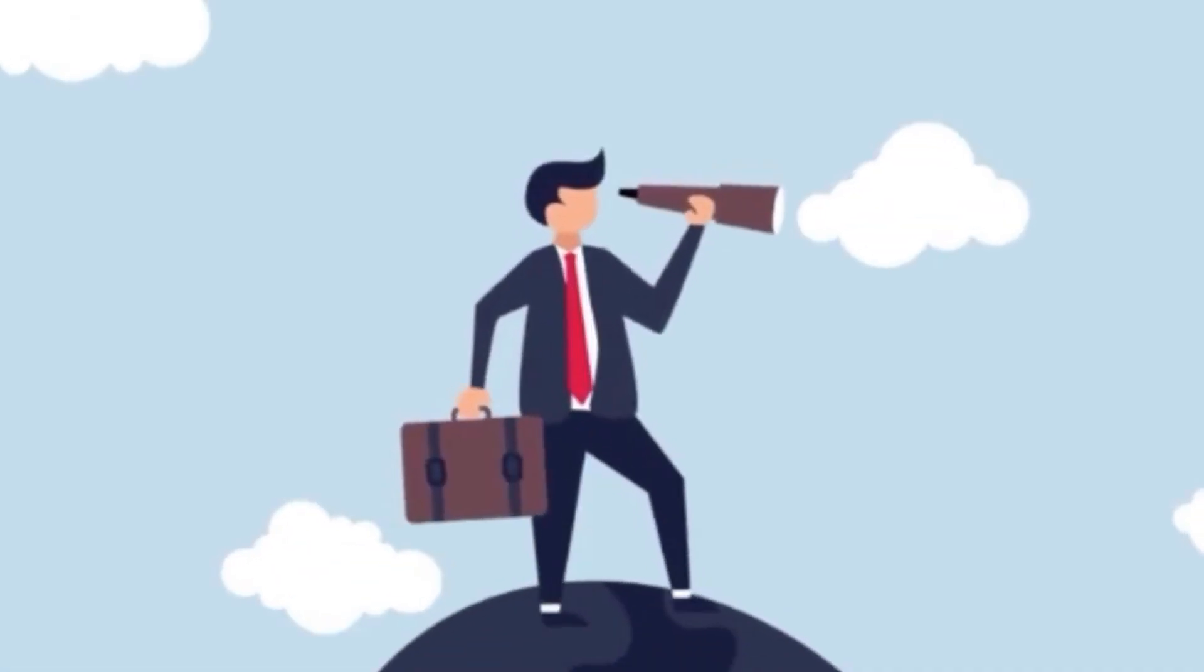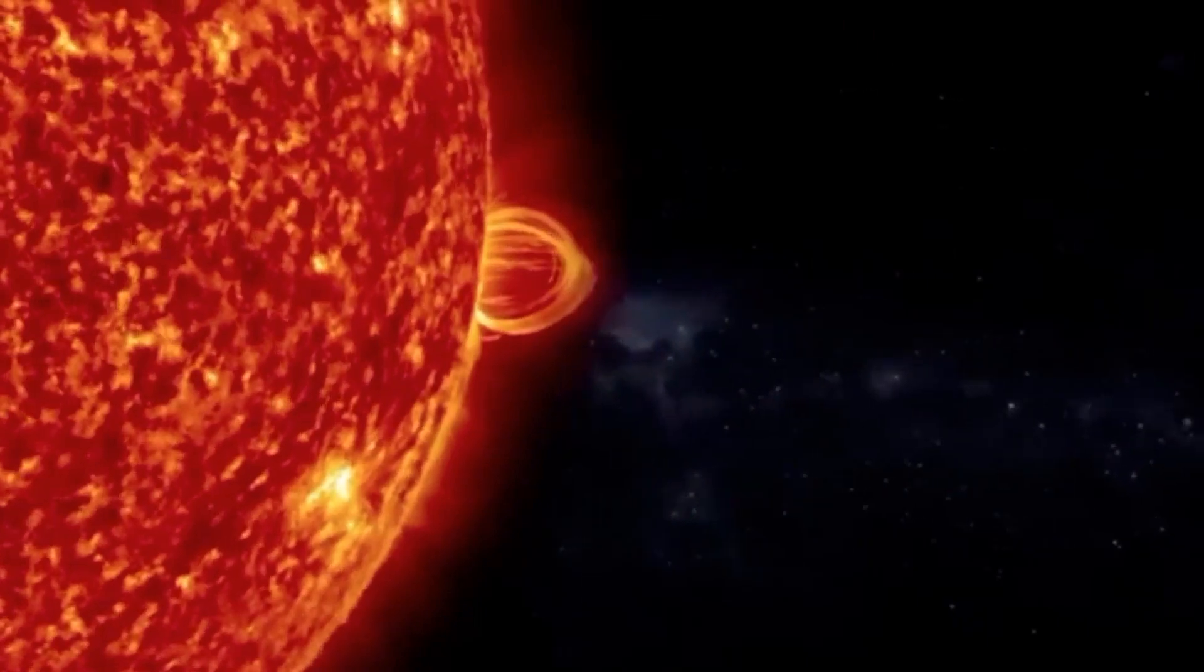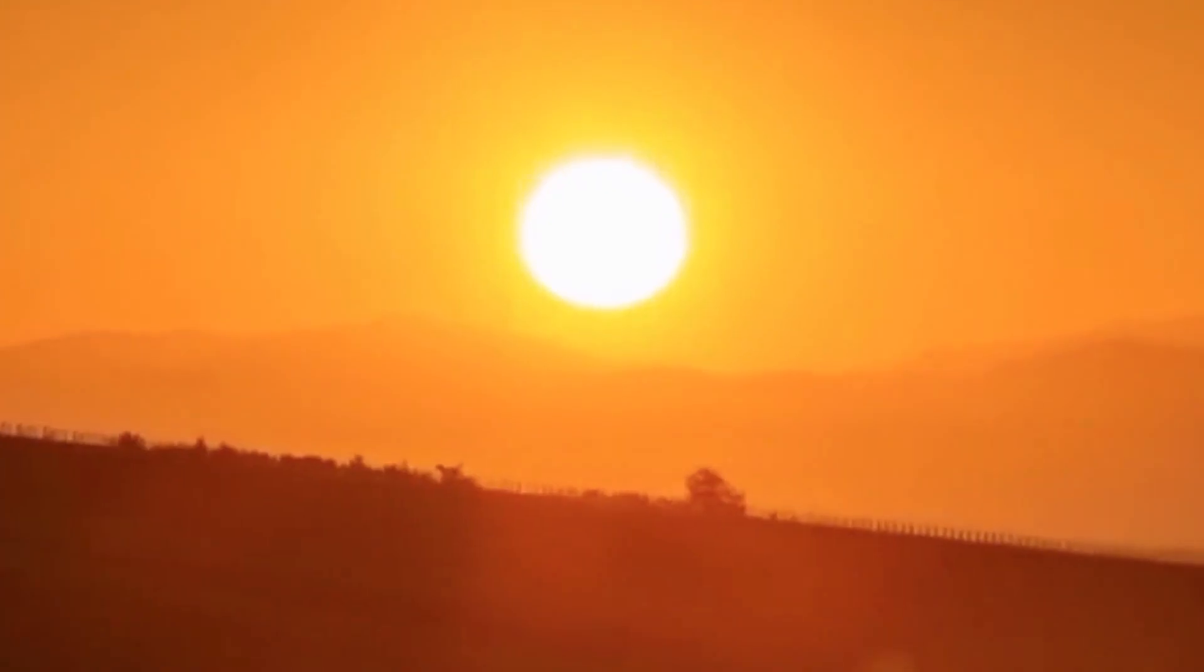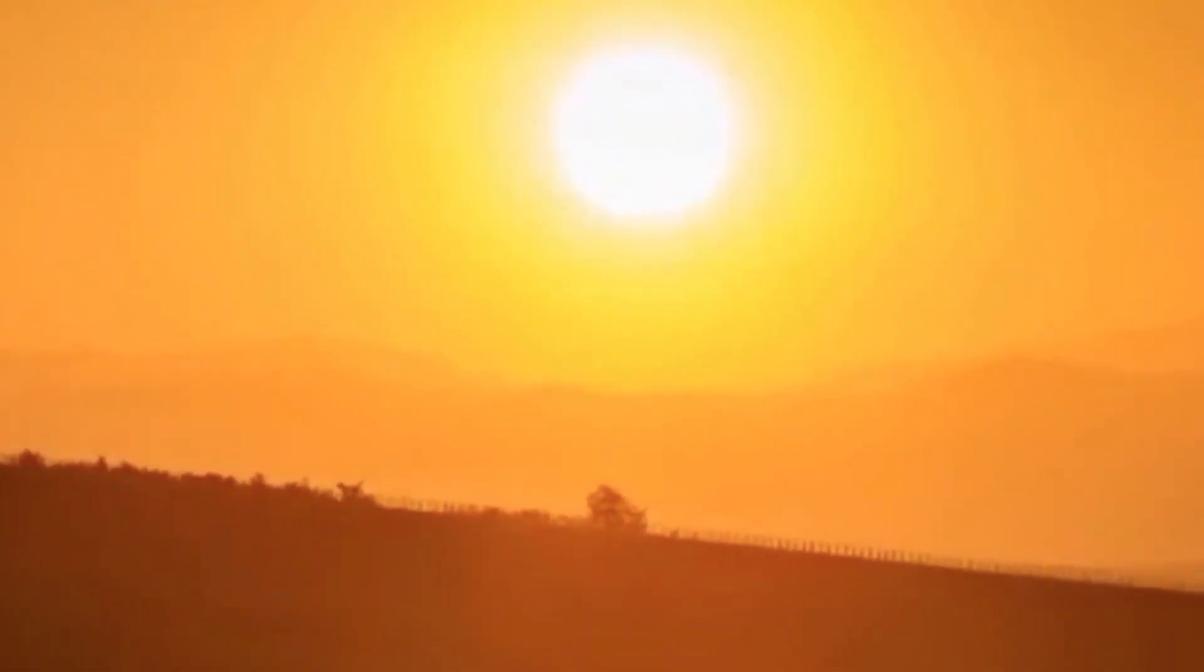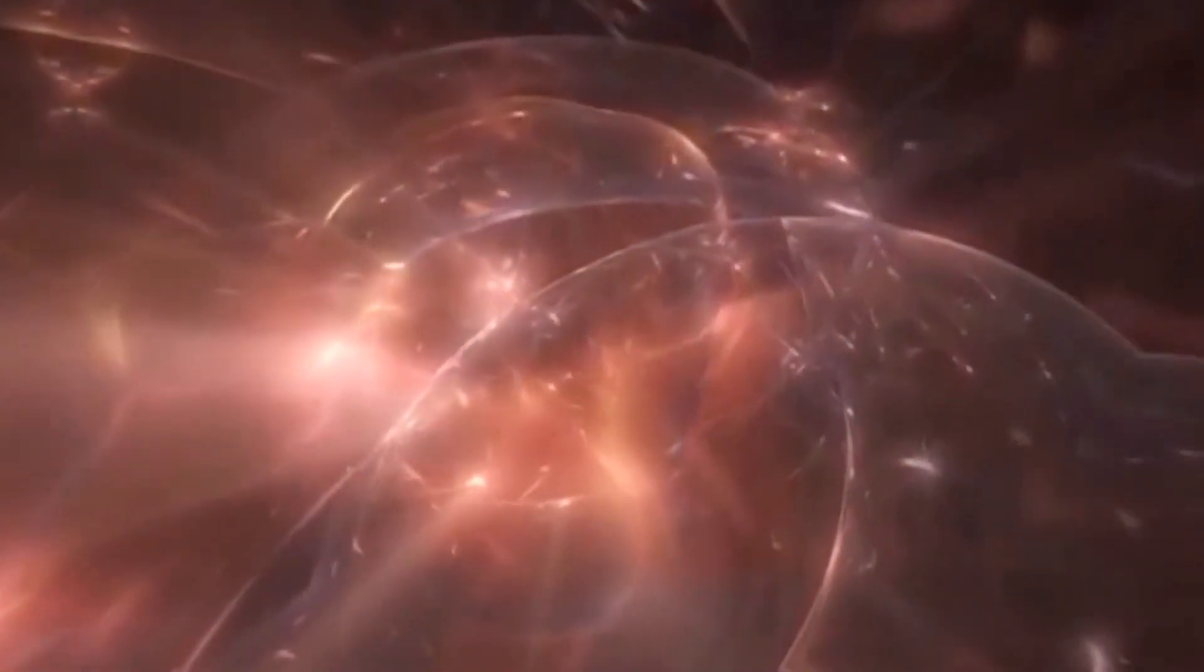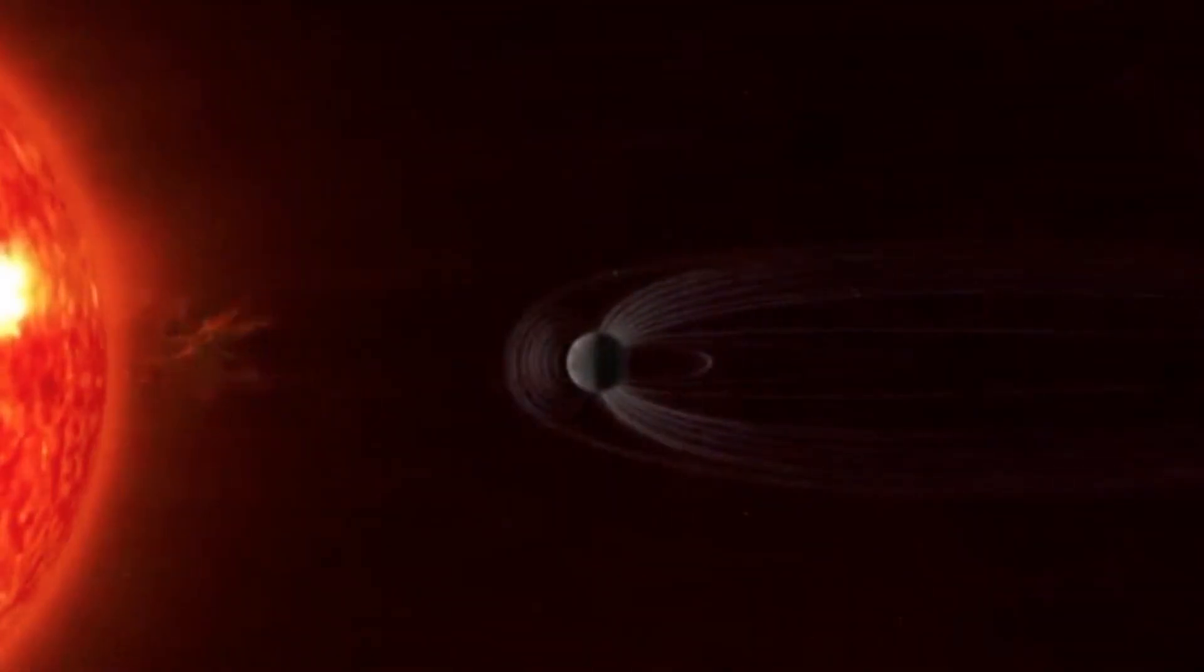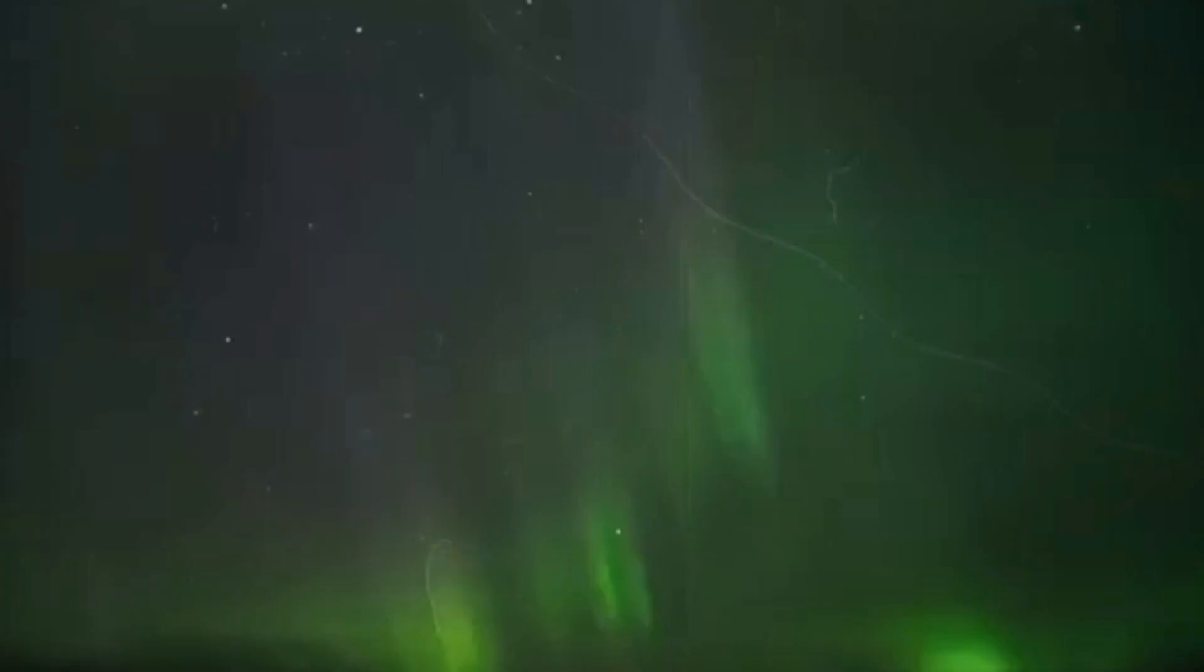Some astronomers predict that the peak of solar activity will occur in 2025, possibly even earlier. This moment, called the solar maximum, represents the highest point of solar activity within a complete solar cycle, and it is characterized by the strongest and most chaotic magnetic field of the Sun. As a result, in the coming years, Earth may face more extreme solar weather conditions.